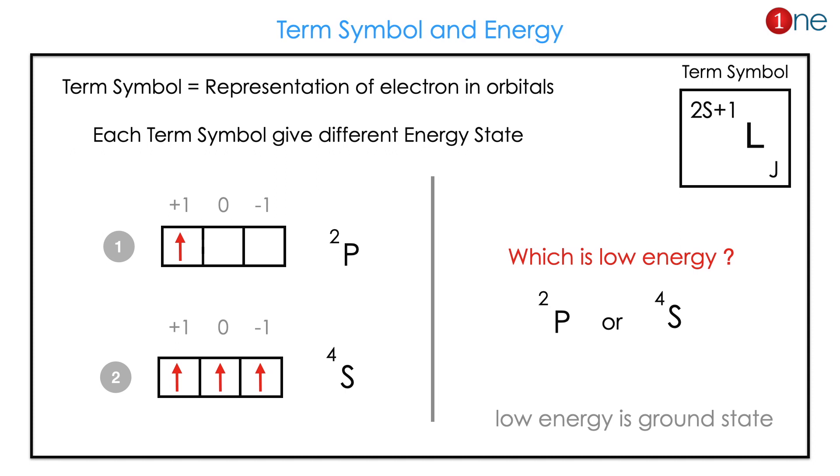Here if you find the term symbol will be 2P and 4S. Which will have lower energy? Whether 2P has lower energy or 4S has lower energy?